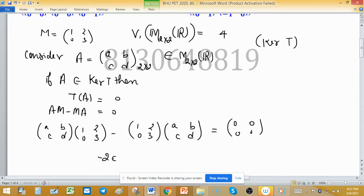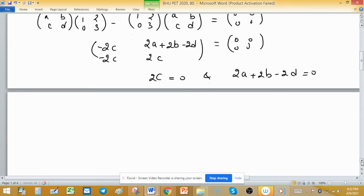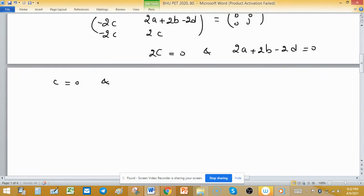This gives us minus 2C, 2A plus 2B minus 2D, and 2C equals 0. It means that 2C equals 0 and 2A plus 2B minus 2D equals 0 by comparison of two matrices when they have the same type and size. This implies that C equals 0 and A plus B minus D equals 0.